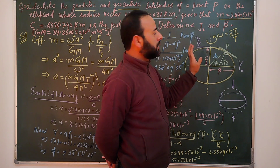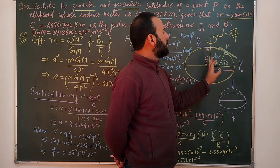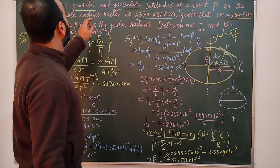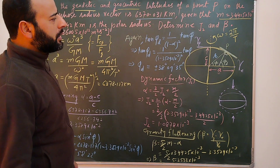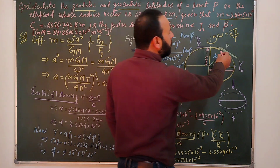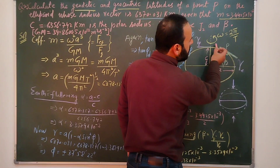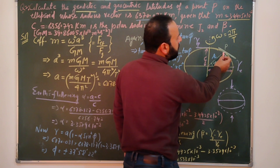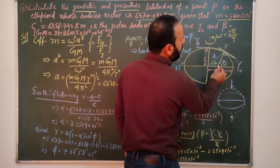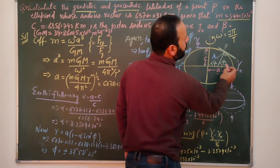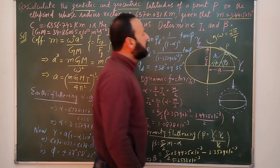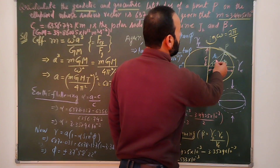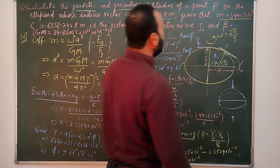The geodetic latitude is defined differently. At point P, we draw a tangent to the ellipsoid, then a line perpendicular to that tangent. The angle that perpendicular line makes with the equatorial plane is the geodetic latitude φ_d. So we need to find φ (geocentric), φ_d (geodetic), J2, and beta.